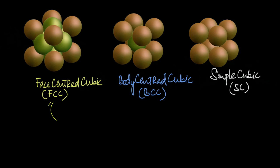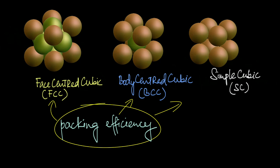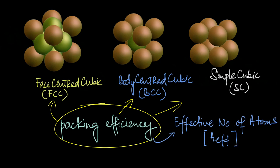Arranging spheres as a cube with a sphere at every corner as well as at each face center is one of the most efficient ways to pack spheres, compared to BCC or simple cubic. To really verify that FCC has the highest packing efficiency, we should calculate the packing efficiency of these different unit cells and compare them. To do that, we first need to understand something called the effective number of atoms, A_effective, of the unit cell. In the next video we will use A_effective to calculate packing efficiency.